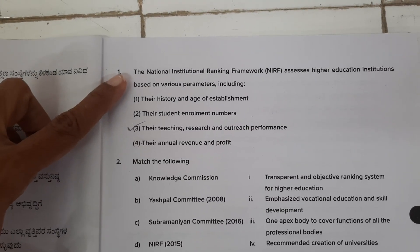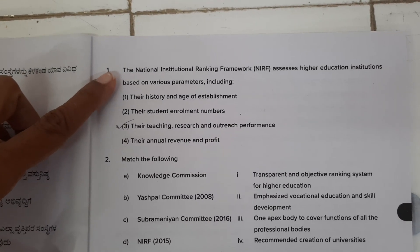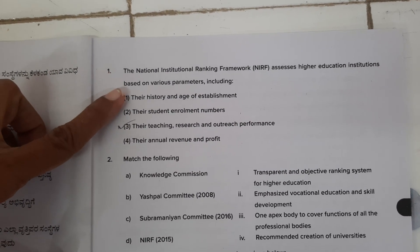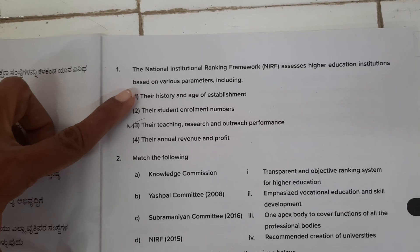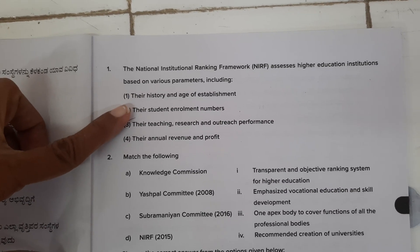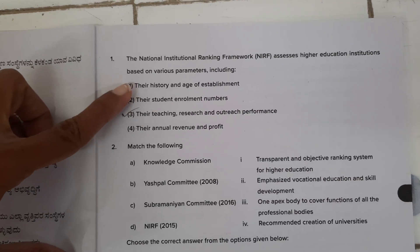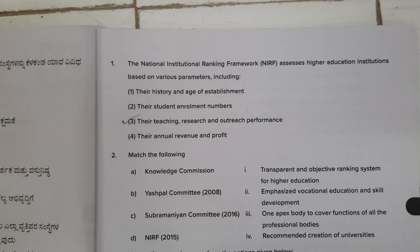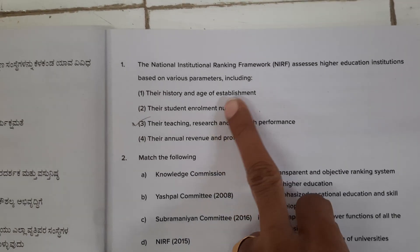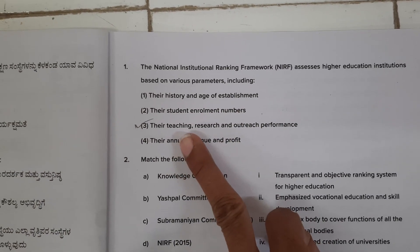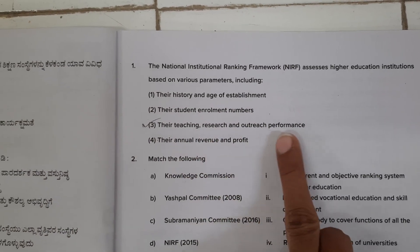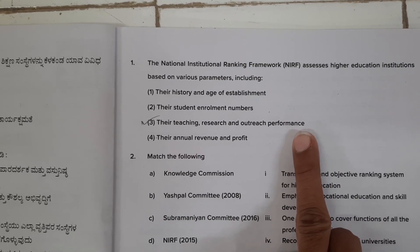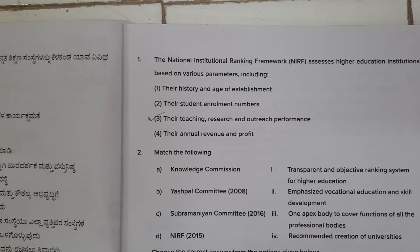The first question: The National Institutional Ranking Framework assesses Higher Education Institutes based on various parameters including the options. If you look into the options — teaching, research, outcome, outreach — performance is the correct answer.